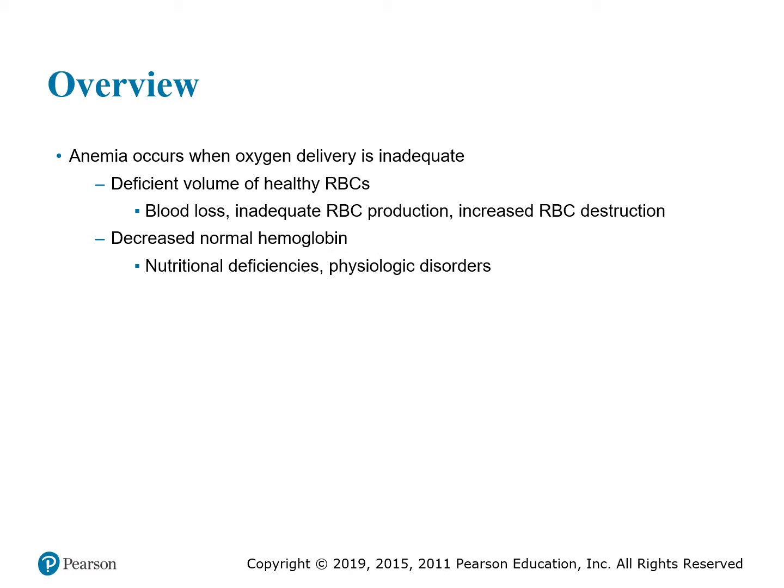The overview starts on page 69. Anemia happens when oxygen delivery is not adequate — it's inadequate. What causes that is a deficient volume of healthy red blood cells, for whatever reason. Maybe the bone marrow is producing immature red blood cells too quickly; they're not having time to mature. Other reasons could be blood loss, inadequate RBC production, and increased RBC destruction. You could be losing red blood cells from blood loss, which is why in an injury it's so important to stop the bleeding.